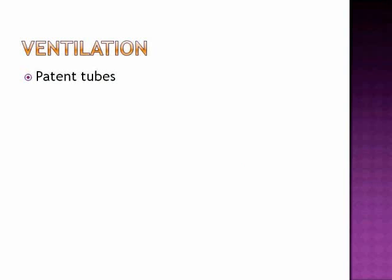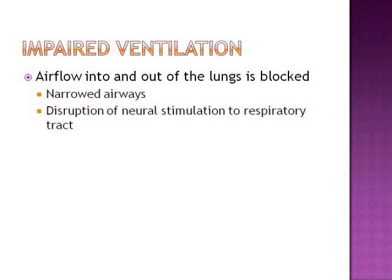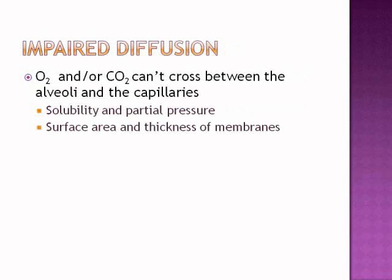Ventilation requires patent tubes — the bronchi, the bronchioles, they all have to be open. Diffusion relies on accessible and permeable membranes down in the alveoli. Impaired ventilation means airflow into and out of the lungs is blocked — this is obstruction. We see narrowed airways and disruption of the neural stimulation to the respiratory tract, meaning the nerves aren't telling the lungs to breathe. With impaired diffusion, oxygen and carbon dioxide can't cross between the alveoli and the capillaries. It may be a problem with solubility and partial pressure, or an issue of surface area and thickness of the membranes.